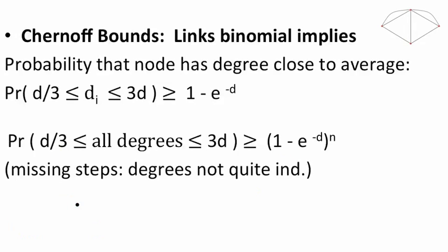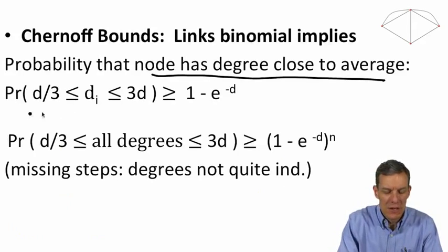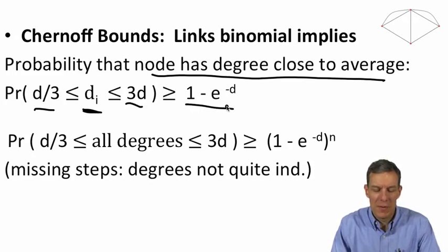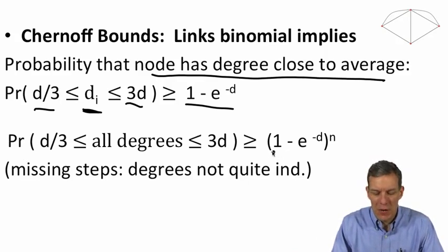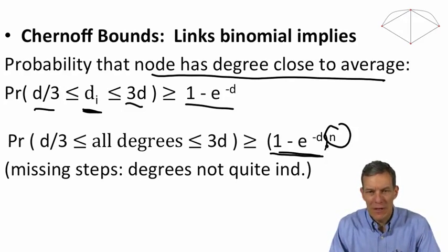How is that useful? Well, the probability that a node is going to have a degree that's very close to the average, the node i is going to be within the expected degree over three to three d is one minus e to the minus d. If we want to then ask that everybody has something which is within a third to a factor of three, what we're going to end up with is we can just raise this to the nth power. So we've got n different nodes. This is the probability that any one of them is within a factor of three. This is an approximation for the probability that we end up within a factor of three for all the nodes.